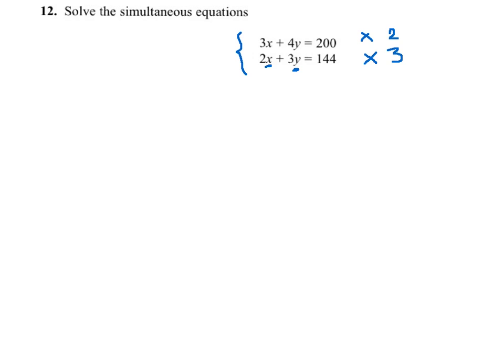So 2 times the first equation gives me 6x plus 8y equal to 400. And the second one will be 6x plus 9y equals 3 times 144, which is 432.